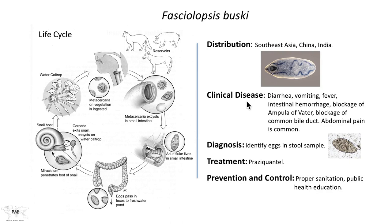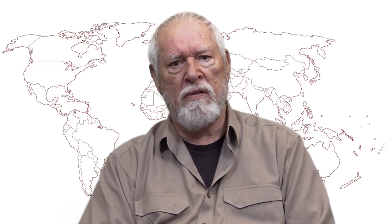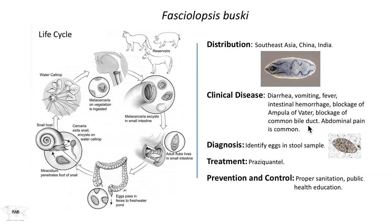Clinical disease also includes blockage of the ampulla of Vater, where the pancreas exits its digestive fluids during feeding, blockage of the common bile duct, because these are large worms — about the same size as Fasciola. Abdominal pain is also common, but as far as the literature is clear, nobody dies from Fasciolopsis buski, but they suffer greatly from it. The eggs are passed into the stool and are a little different in shape than Fasciola eggs, so you can distinguish them if you've got them side by side.